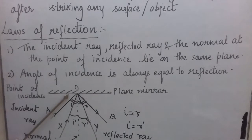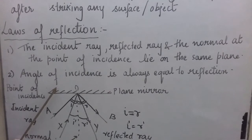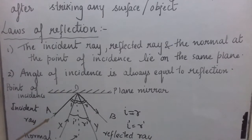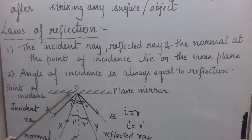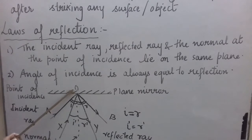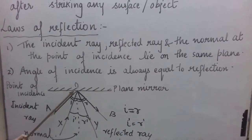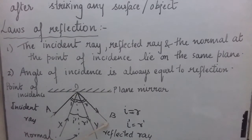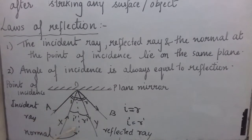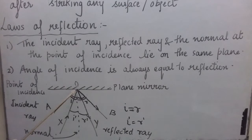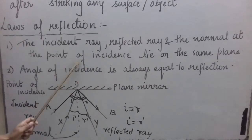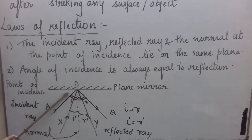As I told you in my previous class, the light which falls on the surface is called incident light, and the light which bounces back is called reflected light. In this diagram, if we consider AO to be the incident ray, then the reflected ray is OB. According to this law, the incident ray AO, the reflected ray OB, and the normal at the point of incidence all lie on the same plane. The point O where the incident ray, normal, and reflected ray meet at the mirror is called the point of incidence.